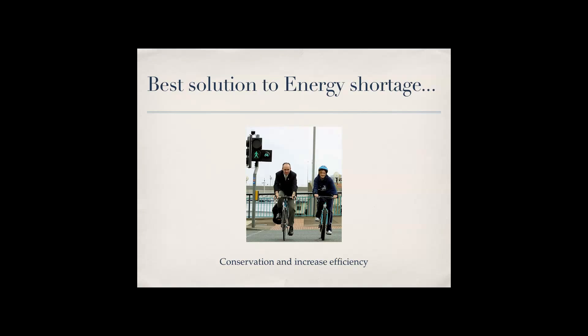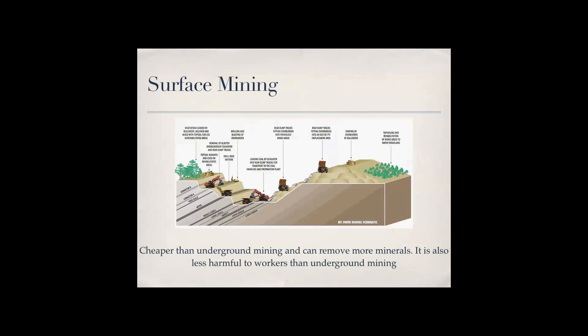Surface mining is when they kind of like mountaintop mining, when they blow off the mountaintops to extract the coal, examples like this and also open pit mining where they dig a really big pit in an area to extract the coal. It's cheaper than underground mining, it can remove more minerals, and it's also less harmful to workers than underground mining.